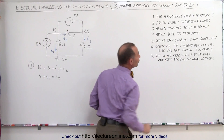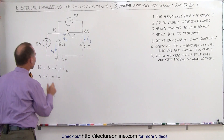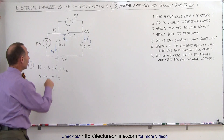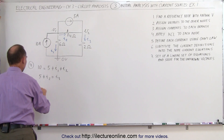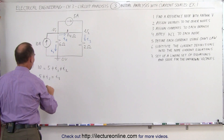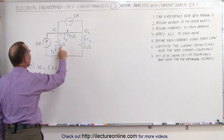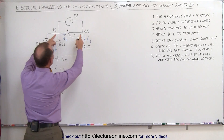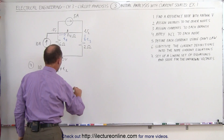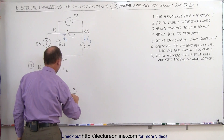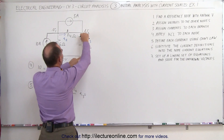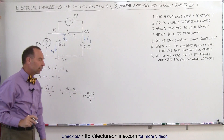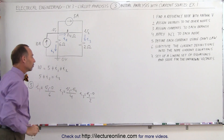The next step is to define each current using Ohm's law — finding an expression for each current in terms of the voltage difference across each branch divided by the resistance of that branch. I1 is defined as V1 minus 0 divided by 6 ohms. I2 is defined as V1 minus V2 divided by 4 ohms. I3 is defined as V2 minus 0 divided by 2 ohms.